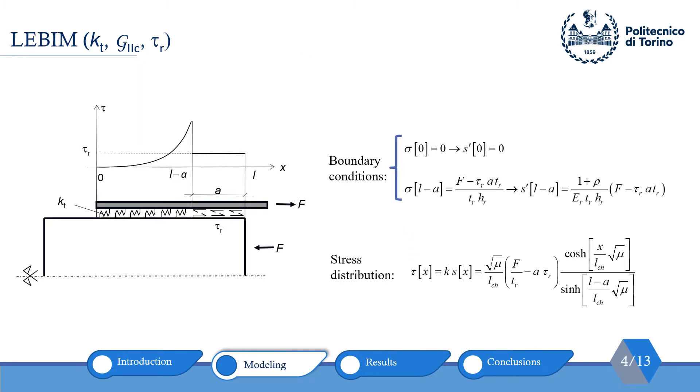As our governing equation is a second-order differential equation, we need two boundary conditions to determine stress distribution. First, it can be traction-free at free end of the reinforcement or x equal to zero. The other one could be force should be equal to F minus tau_r·a·tr because we have loss of force due to the friction in the debonded zone.